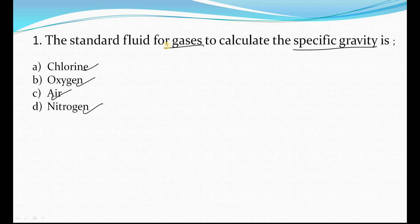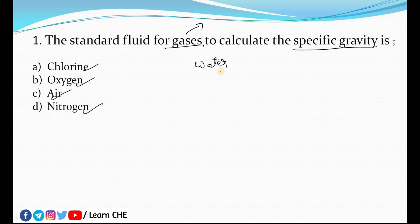In the case of liquid, we use water as a standard fluid. But if the fluid is a gas, then we will use air as a standard fluid. So that is the answer — the standard fluid for gases to calculate the specific gravity is air.